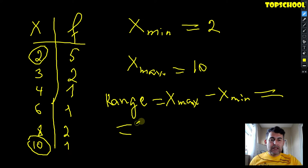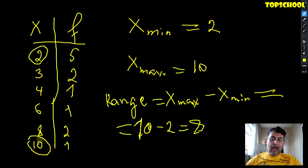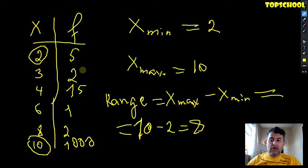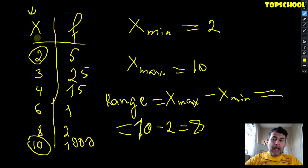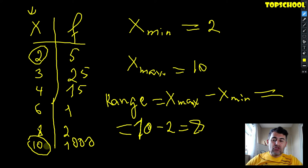It doesn't matter how frequently the data is distributed. We look at the values: the biggest value in our data is ten and the smallest value is two. So X minimum equals two and X maximum equals ten. The formula says range equals X max minus X min. In our case: 10 minus 2 equals 8. This is the range of the data.